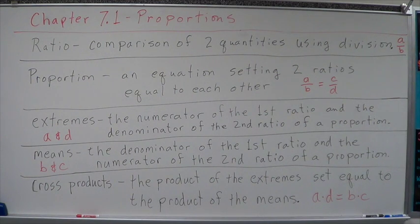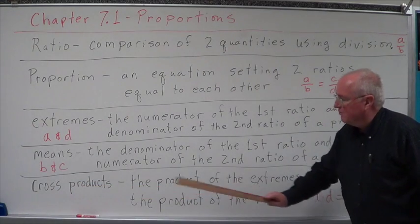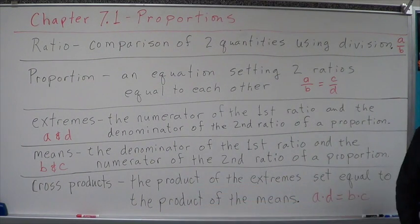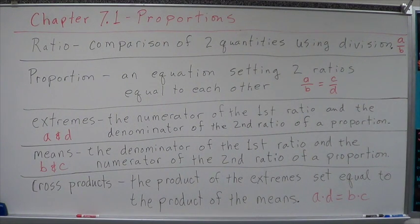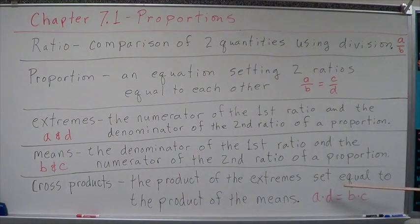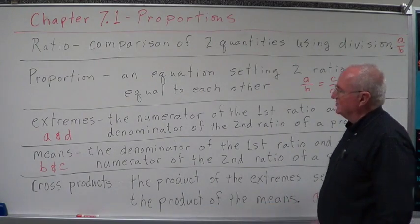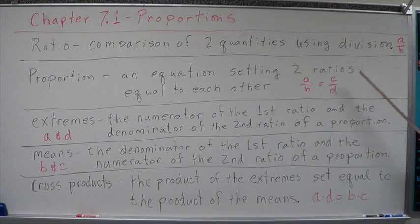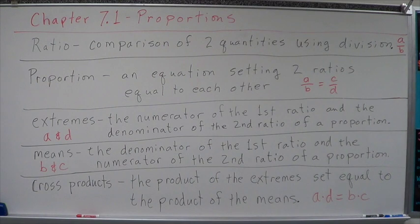Now, why do we need to know those? So that we can do cross products. Cross products are the product of the extremes set equal to the product of the means. The product is the multiplication result of the extremes, multiplying A and D by each other, set equal to the product of the means, the multiplication answer to the means, which is B and C. What does that look like? A times D equals B times C. That's how you solve a proportion for an unknown. Cross multiply and solve for the unknown. Those are our definitions.